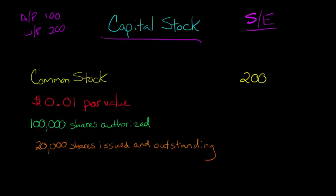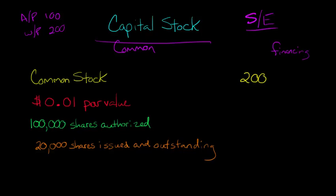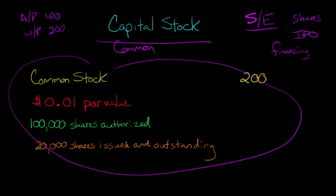Basically this is the capital stock section of the balance sheet, and for a lot of firms you could just go ahead and call it the common stock section because some firms don't have preferred stock or anything like that. But more generally we just refer to it as capital stock, and it's basically how the firm gets financing. When you hear about a firm having an IPO, they're basically raising money for the firm by issuing shares of stock.